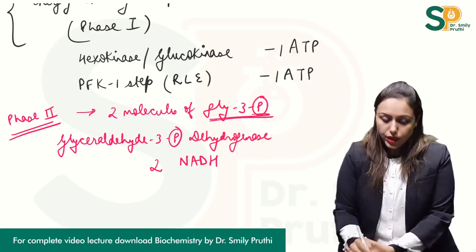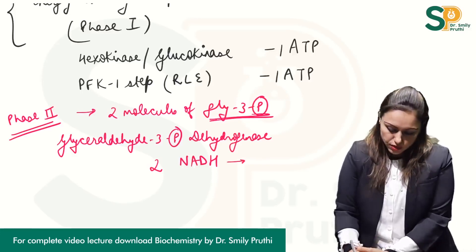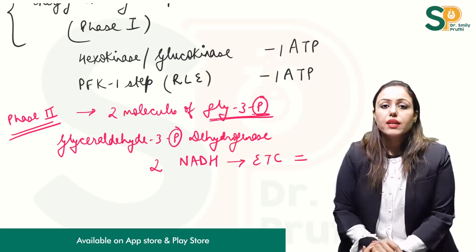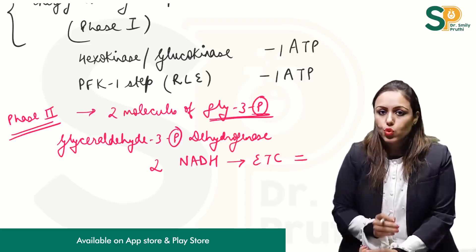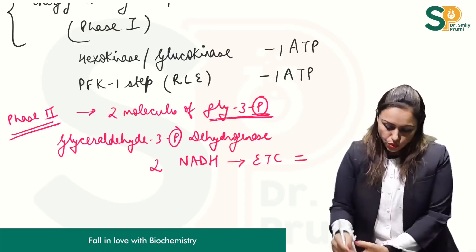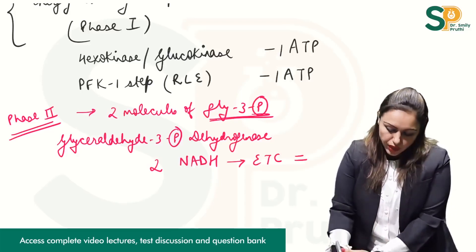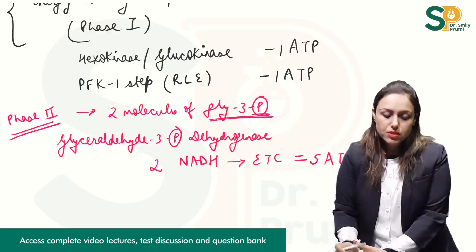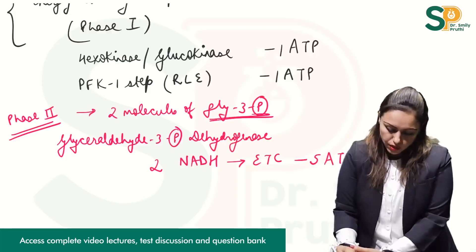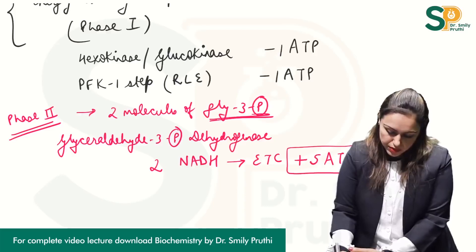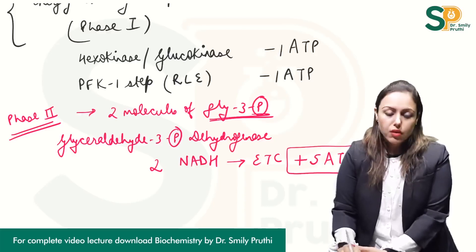These 2 NADH will go into the ETC. One NADH gives you 2.5 ATPs, so 2 NADH will give us 5 ATPs. Here I will write plus 5 ATPs. We have already taken minus 2 ATPs in phase 1.